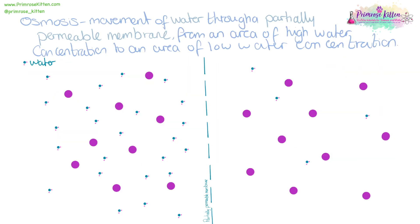Osmosis is specifically the movement of water through a partially permeable membrane from an area of high water concentration to an area of low water concentration. The pores in the partially permeable membrane aren't large enough for the solute to move through, so water is the one that moves through. This can happen in root hair cells where we're looking at the uptake of water.